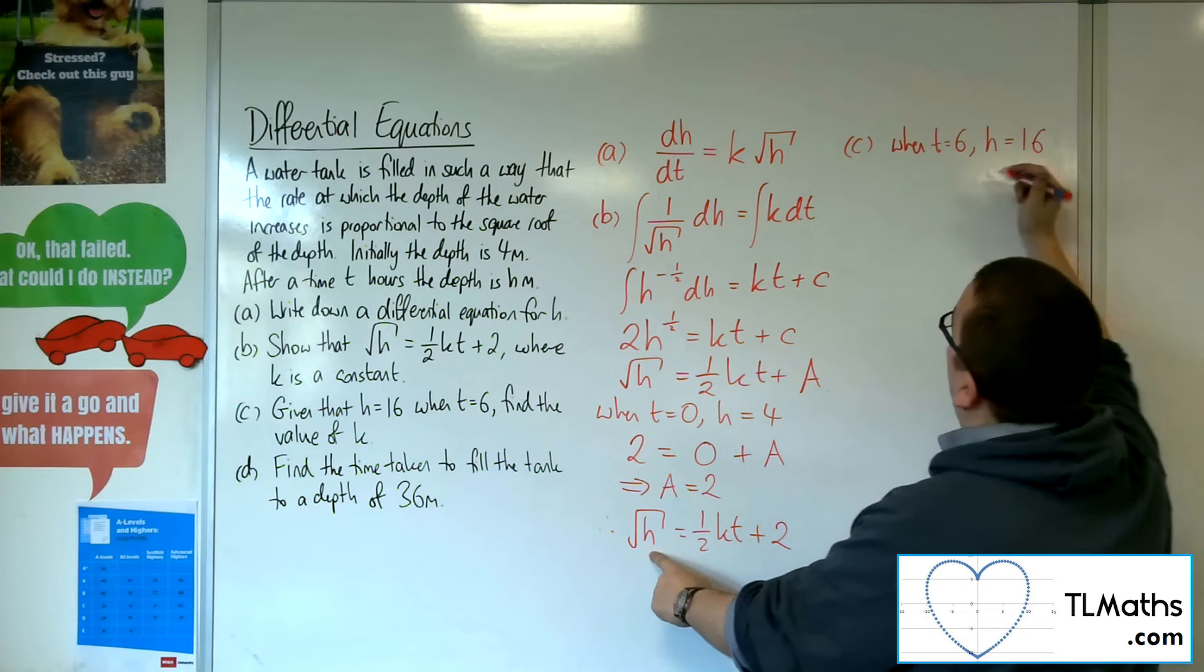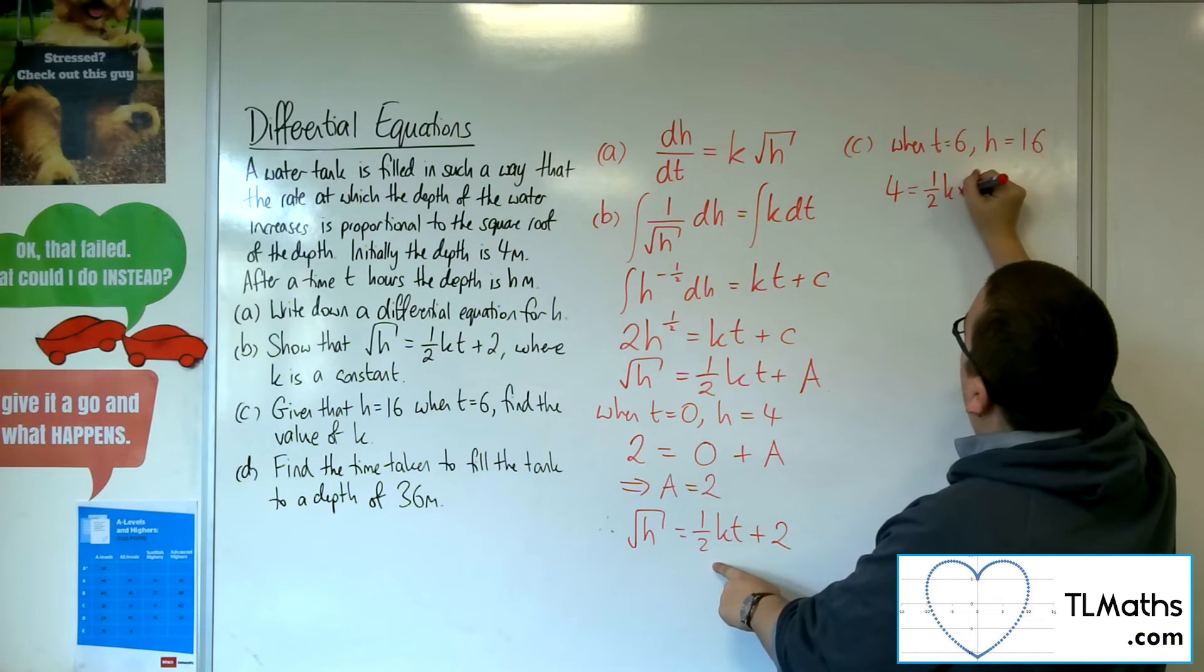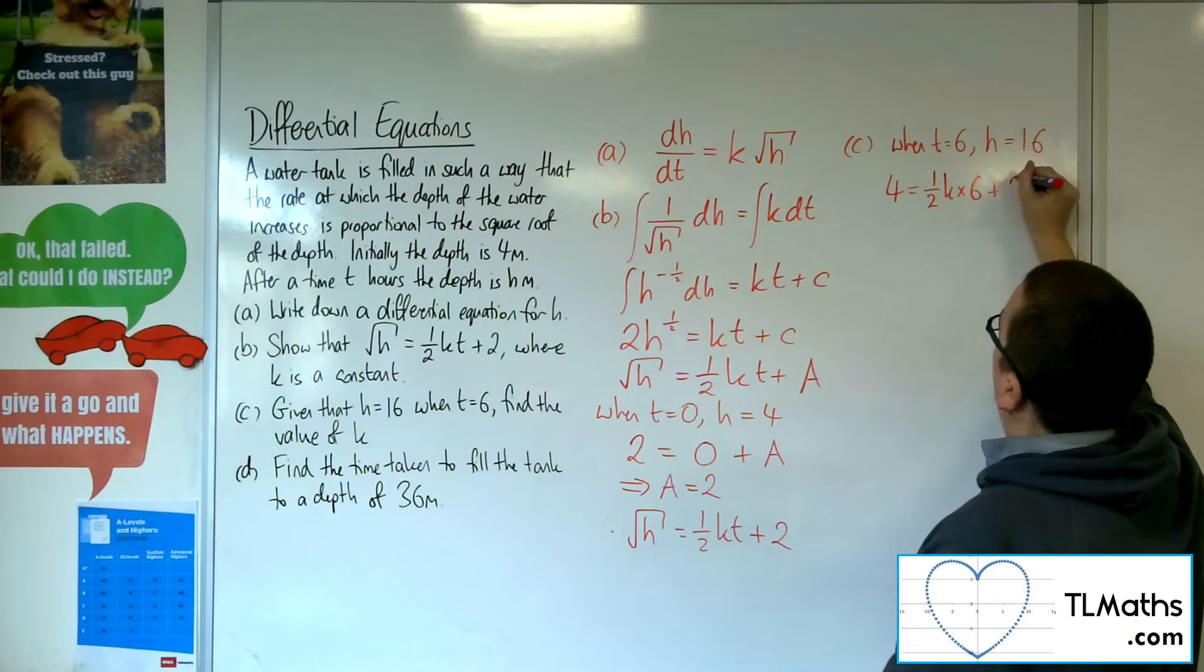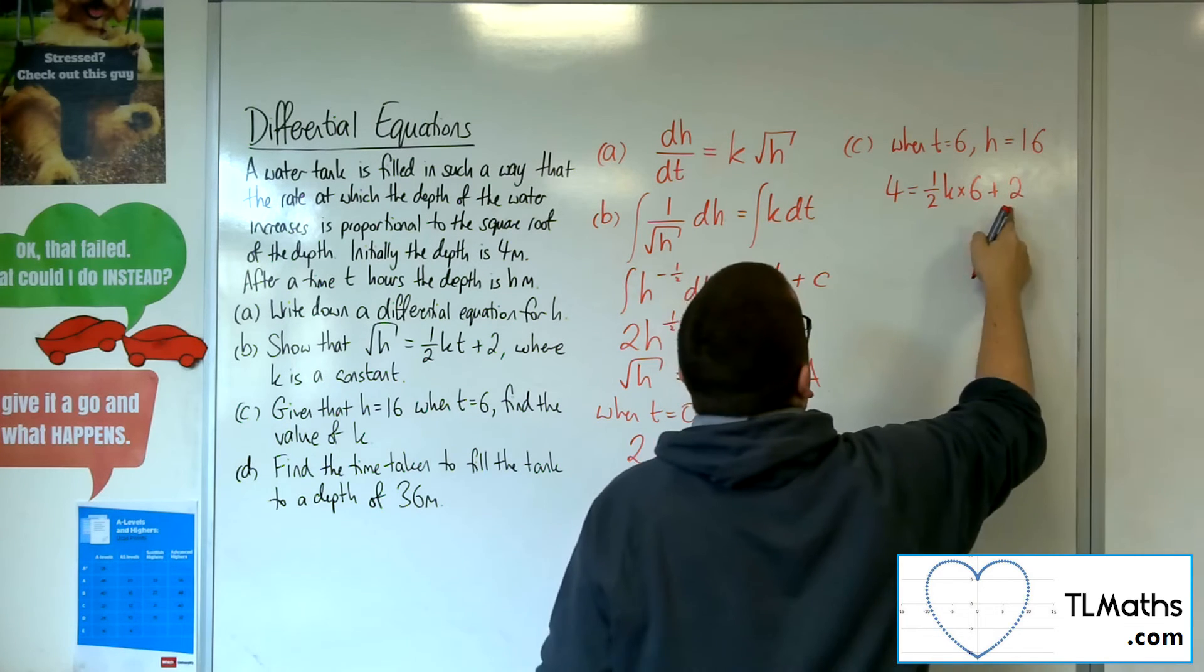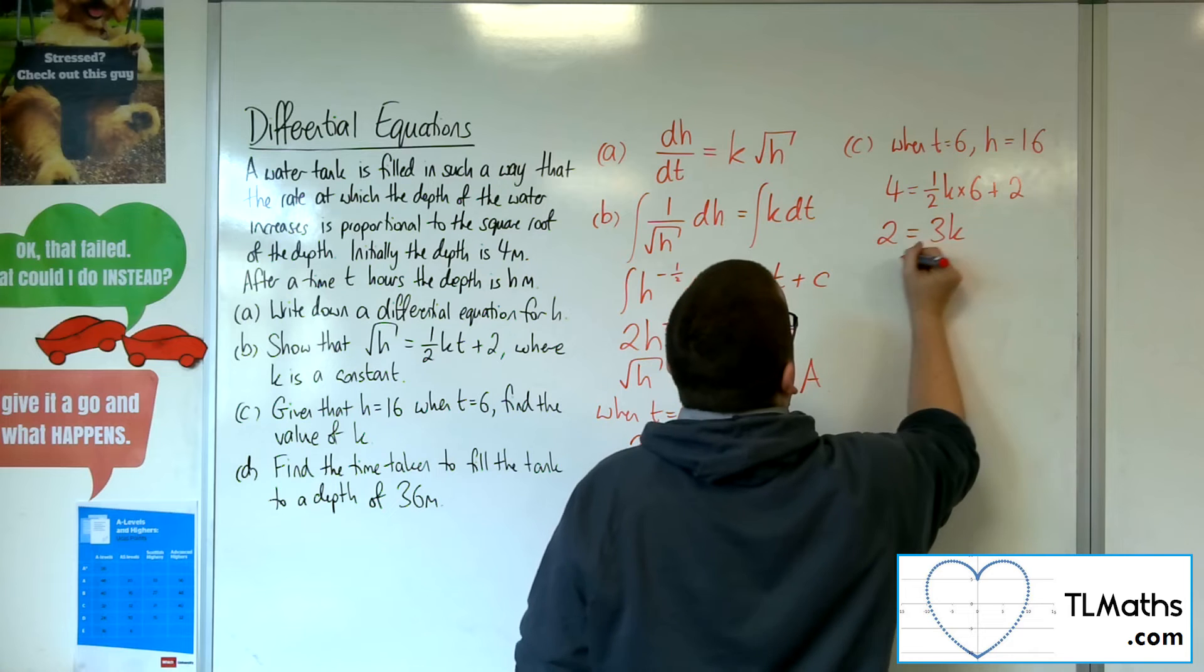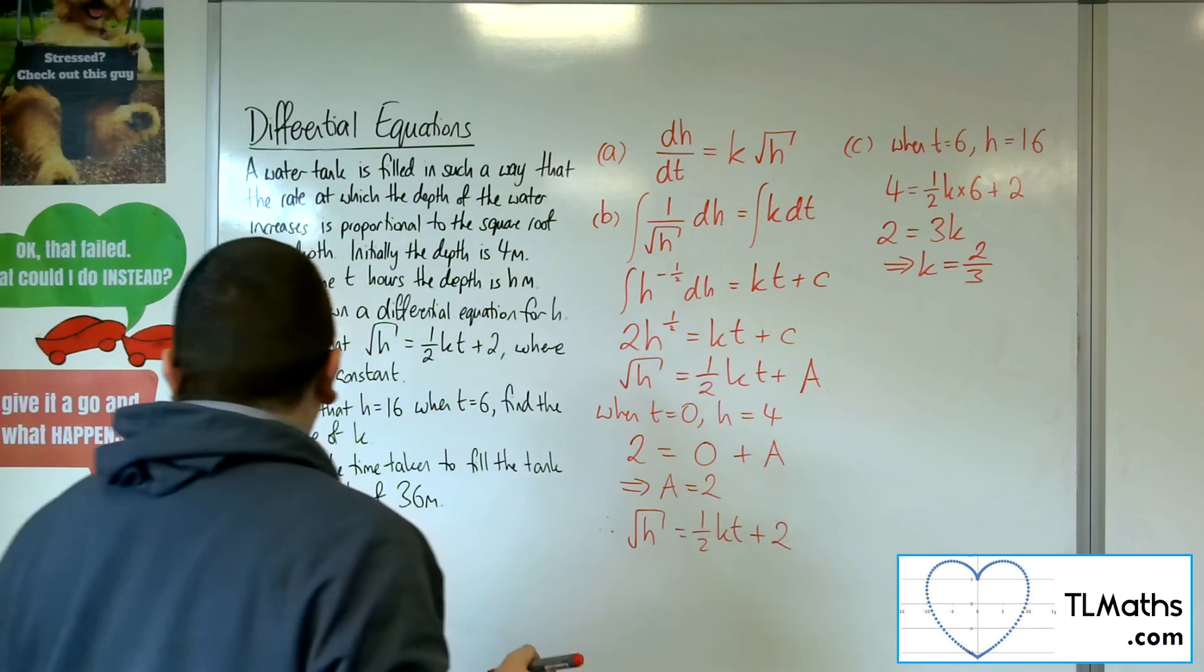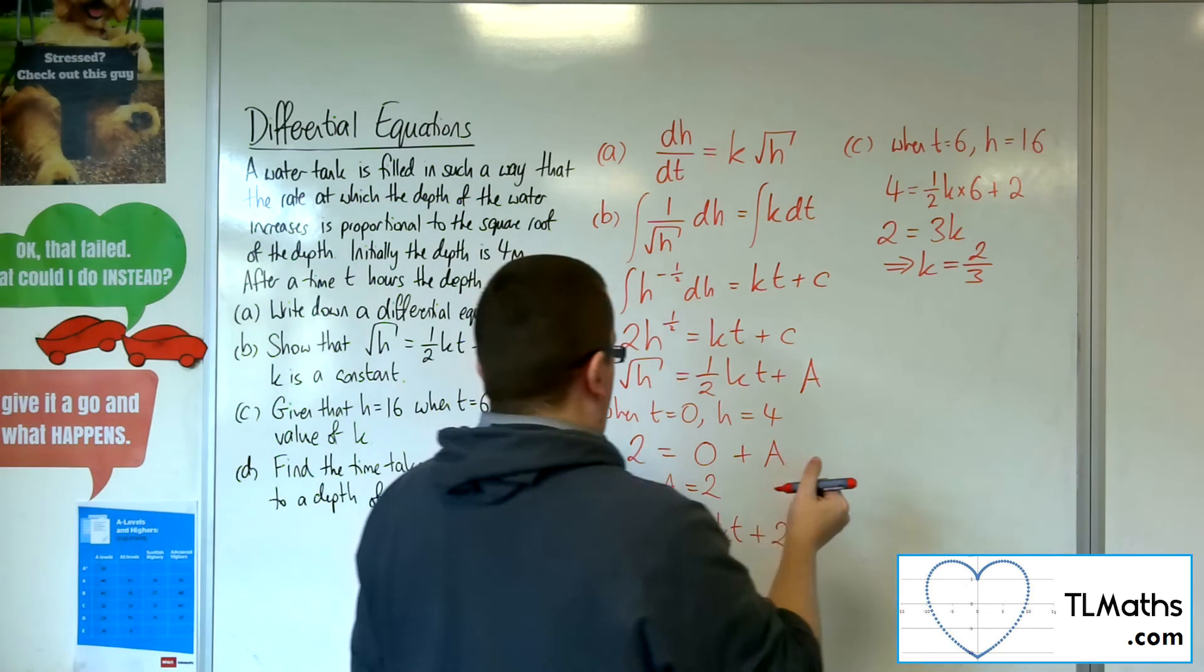So I've got the square root of 16, which is 4. I've got 1 half k times 6 plus 2. Now, if I take the 2 from both sides, half of 6 is 3. So that means that k is 2 thirds. So that's what I was really asked to do.